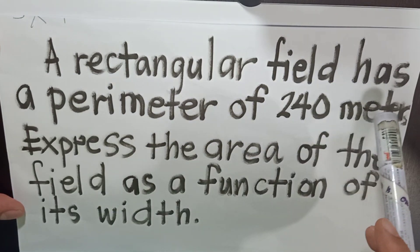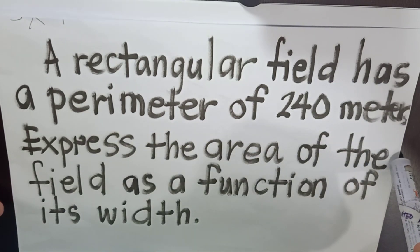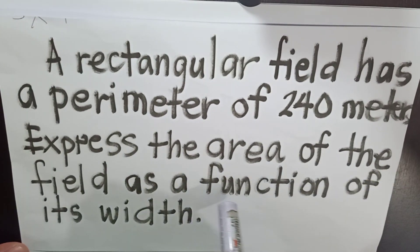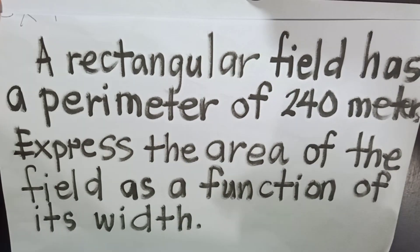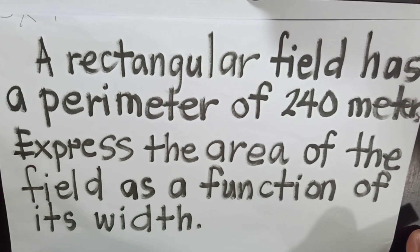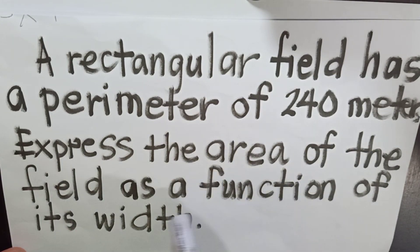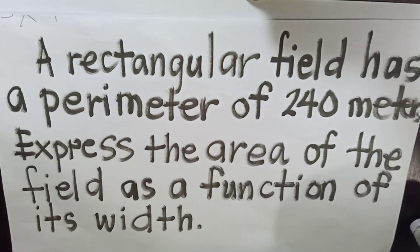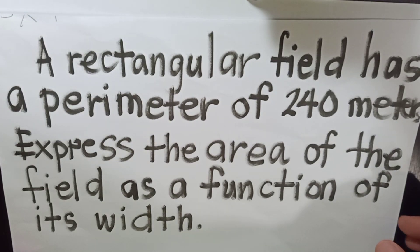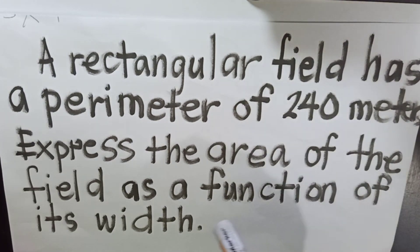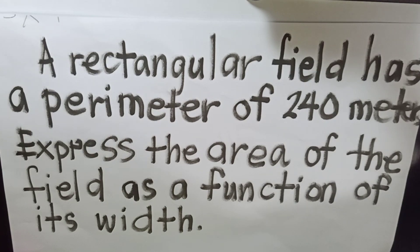Again, a rectangular field has a perimeter of 240 meters. Express the area of the field as a function of its width. In this case, what is being asked is to express the area of the field as a function of its width. Since we do not know the width and the dimension, we are going to assign x and y as the width and the length, usually expressed in meters respectively.